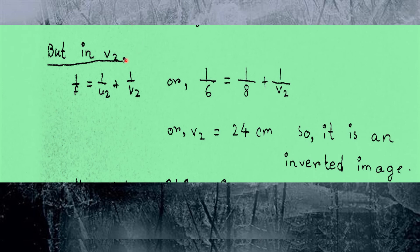Now let's look at the second case where the distance is 8 cm. Using the formula 1/f = 1/u + 1/v, we calculate v₂ equals 24 cm, which is positive.